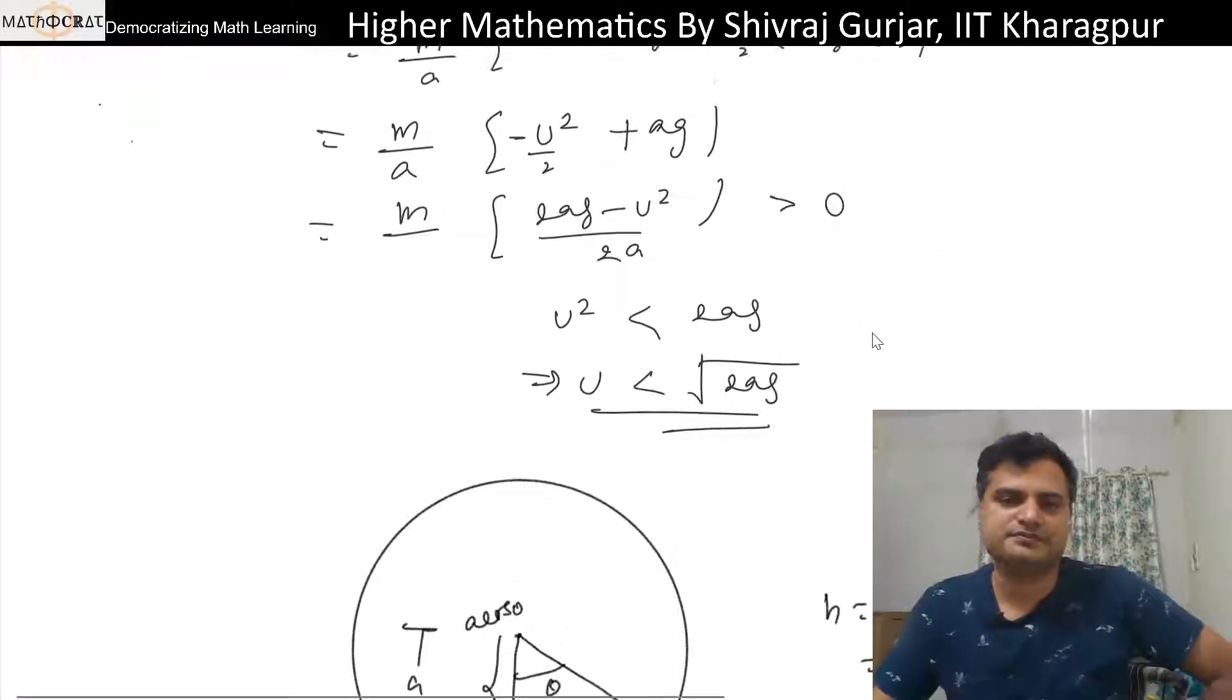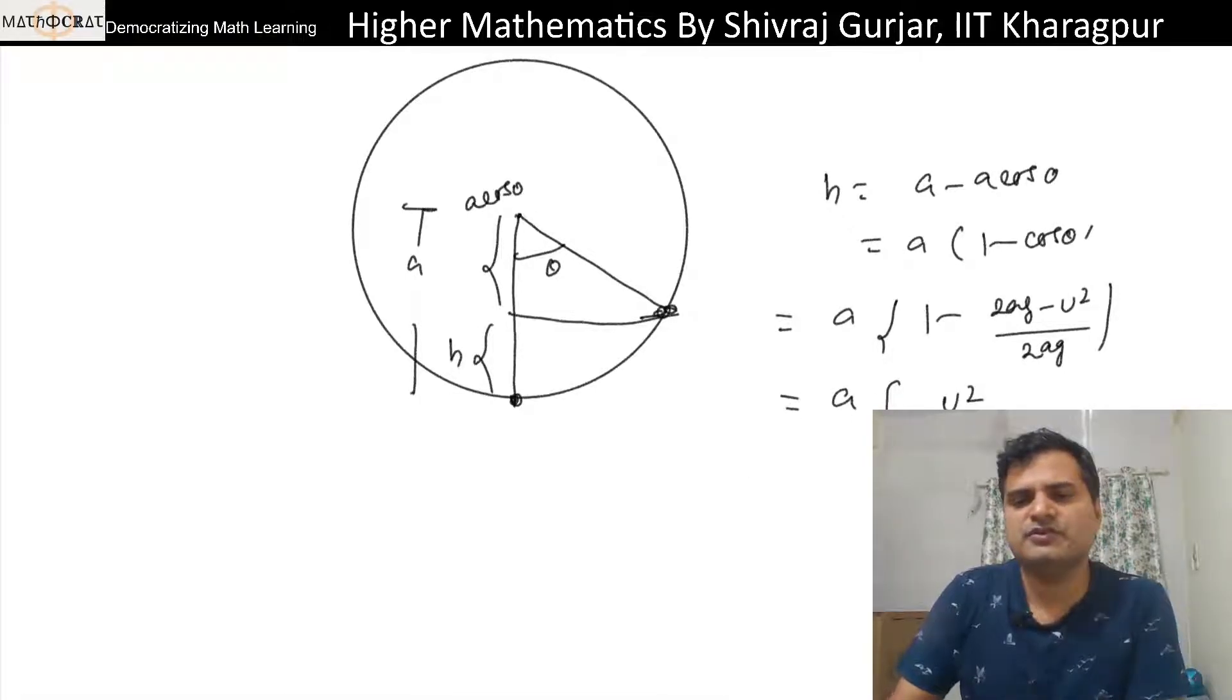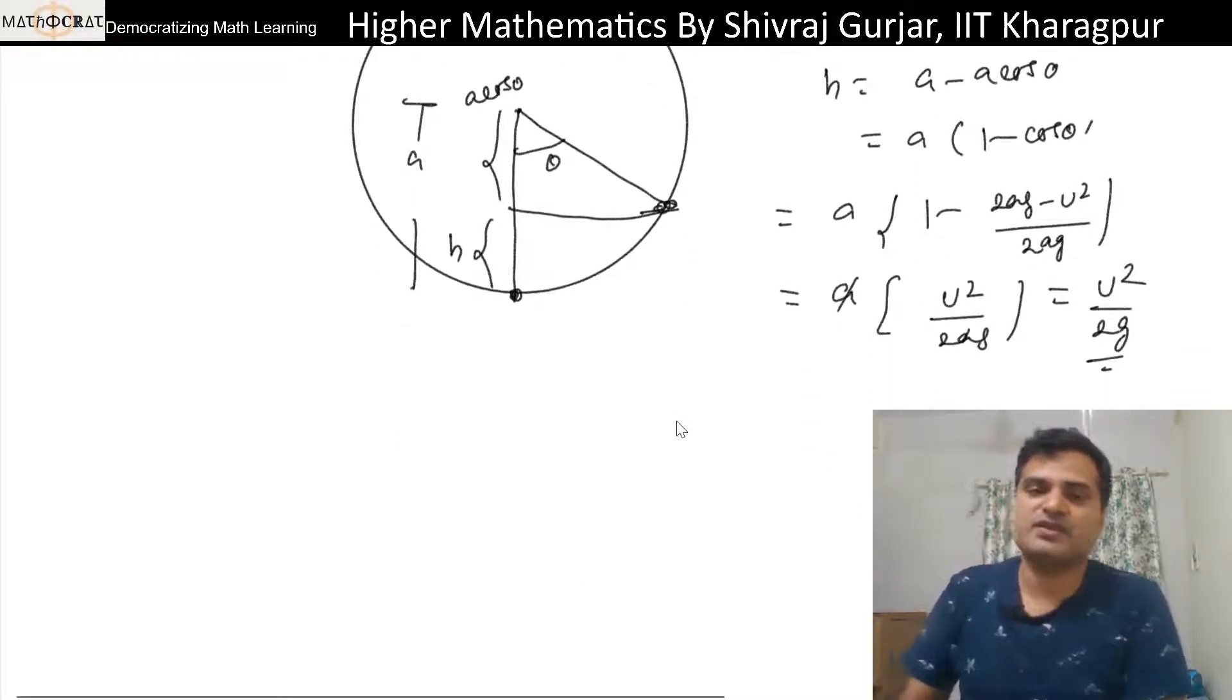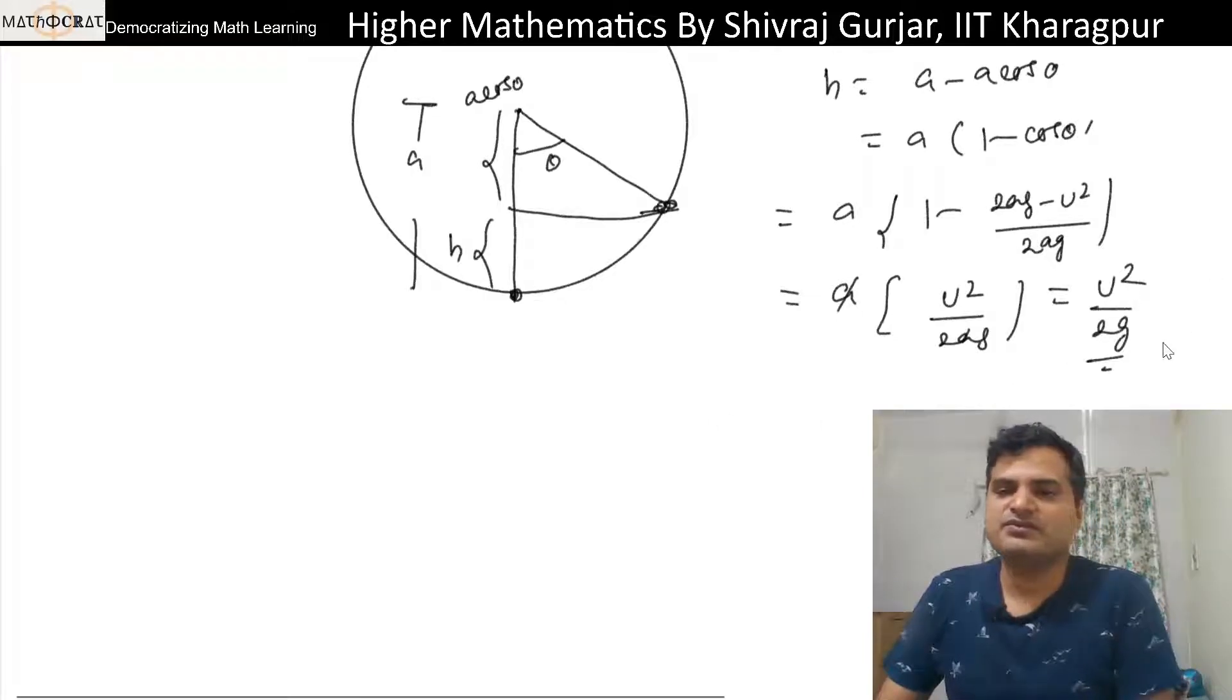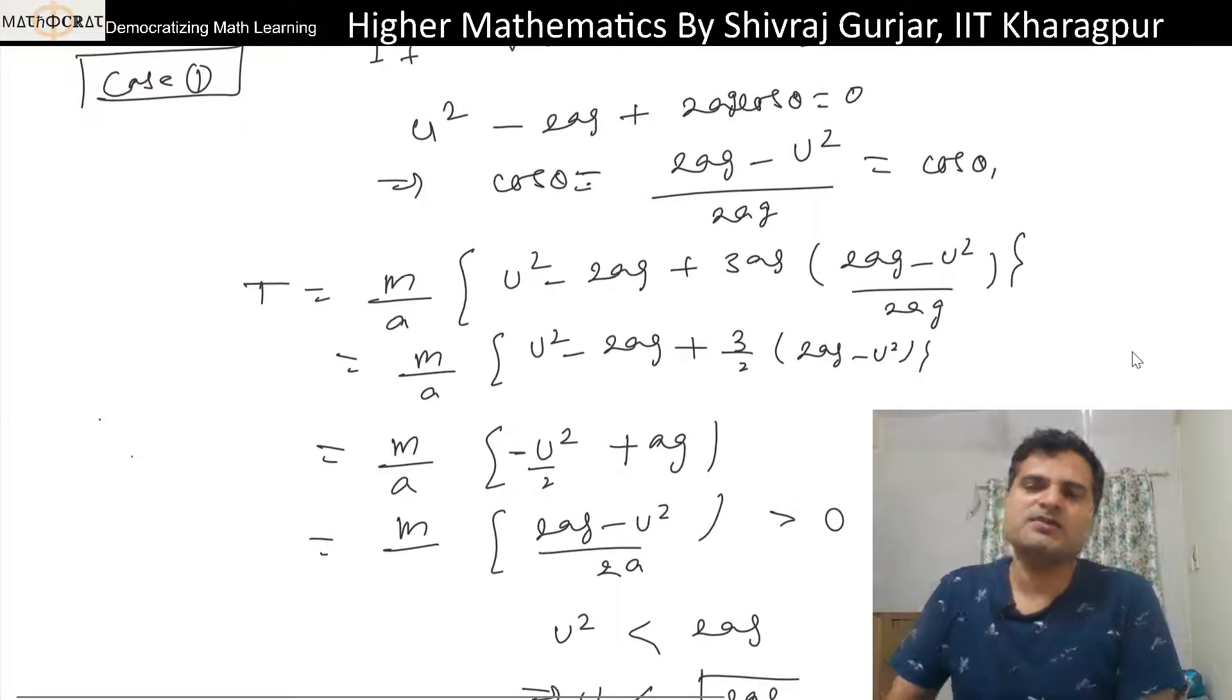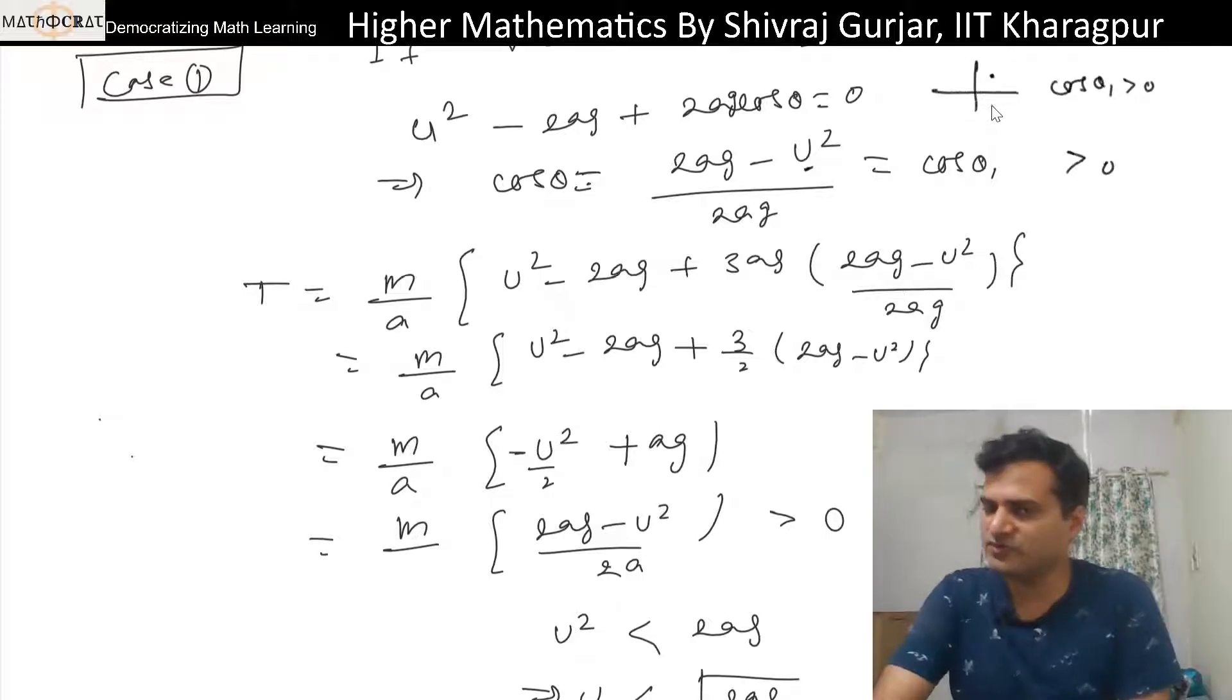So this is u² divided by 2ag. This is the height where velocity will be zero. See one more thing, because velocity u is less than √(2ag), so this will be always positive, cos θ₁ > 0.